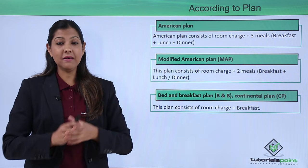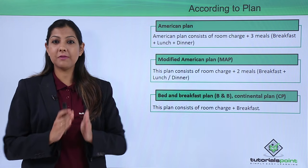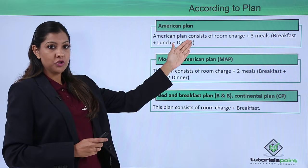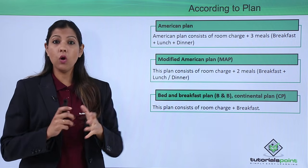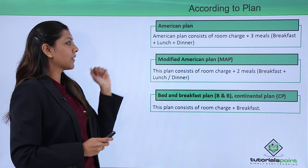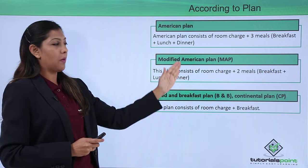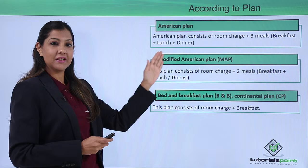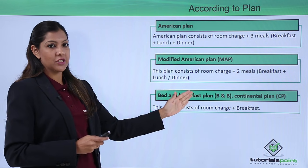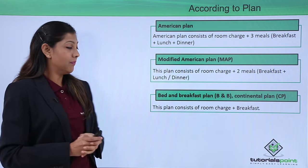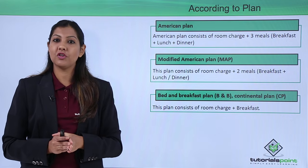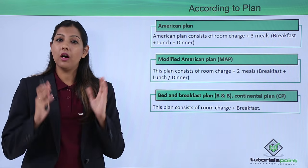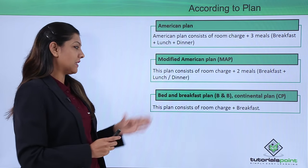Many hotels have a particular meal plan. The American Plan includes the room charge plus three meals — breakfast, lunch, and dinner — all inclusive. The Modified American Plan (MAP) includes the room charge plus two meals — breakfast and either lunch or dinner. The Bed and Breakfast Plan (B&B), also called the Continental Plan (CP), includes the room charge plus breakfast only.